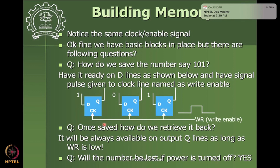We're building up a three-bit register and we want to retrieve the value. The value is already available at the Q terminals. We want to use the same data lines to both transfer values into the register and take values out. Also, if you turn off the power given to these flip-flops, the memory will be lost — we won't have the same number available when power comes back.